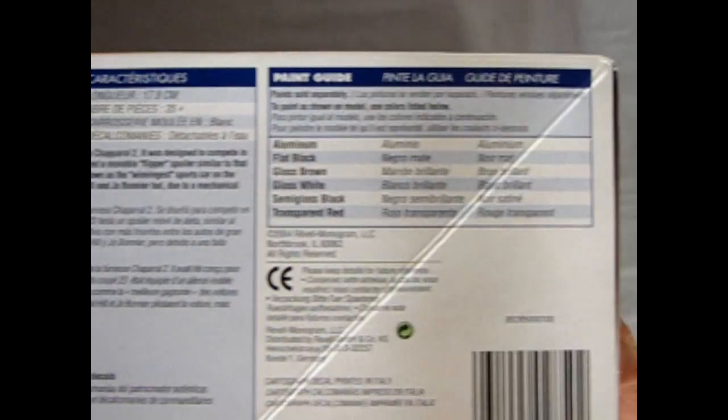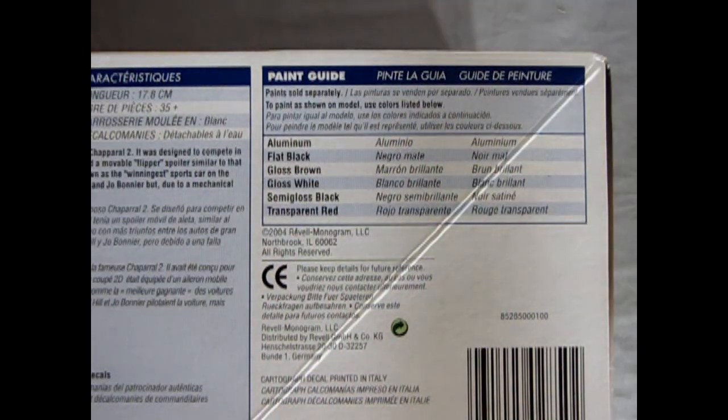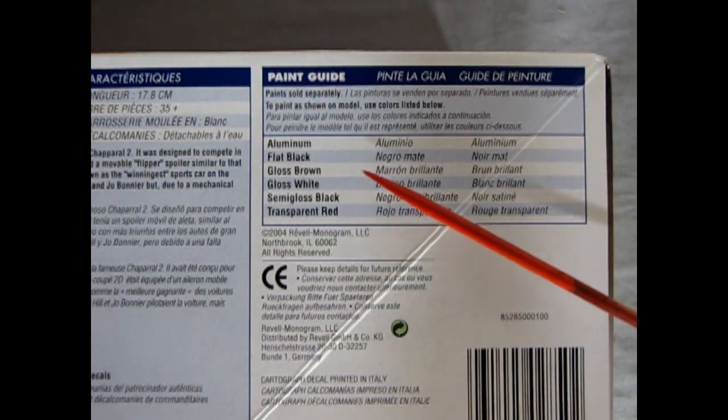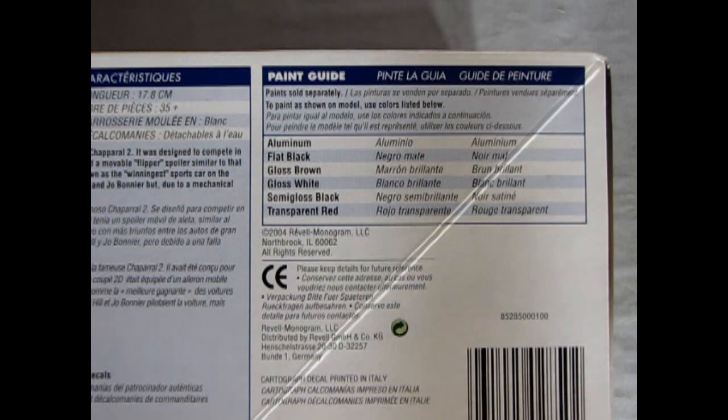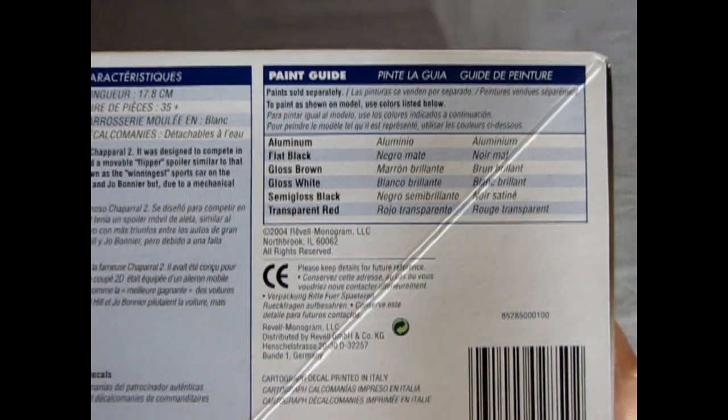And over here we got a little paint call out. It says you need to get aluminum, flat black, gloss brown, gloss white, semi-gloss black, and transparent red. Very interesting.